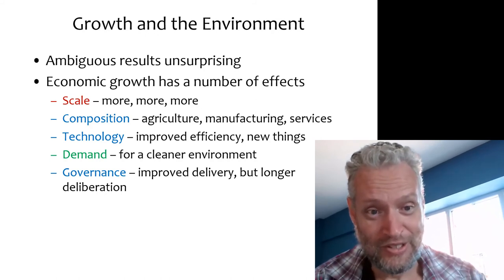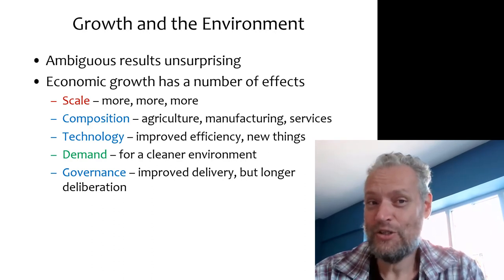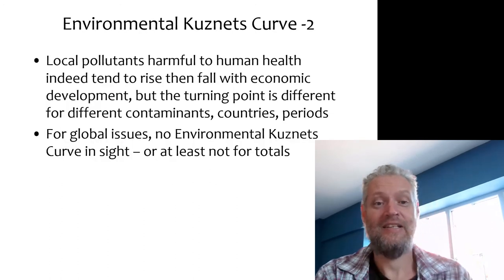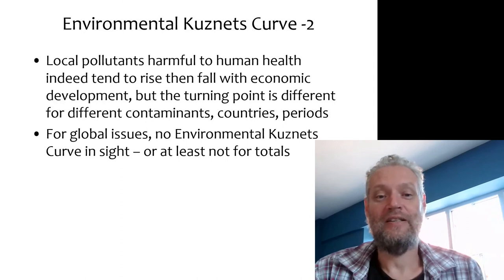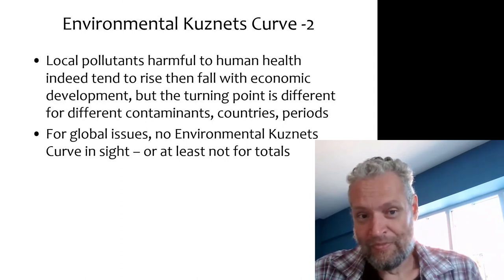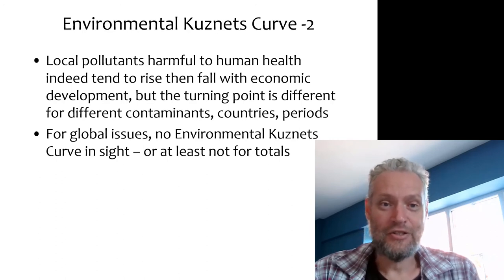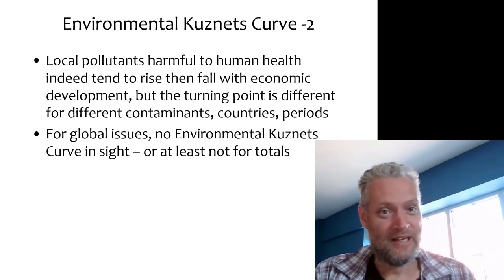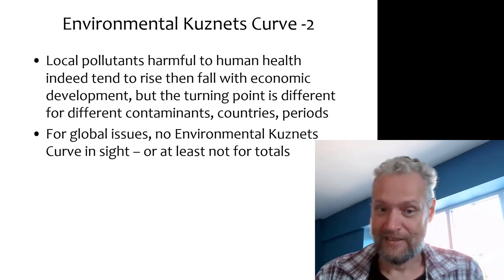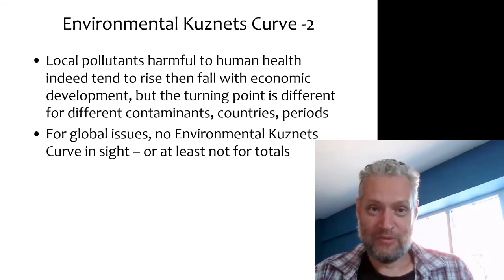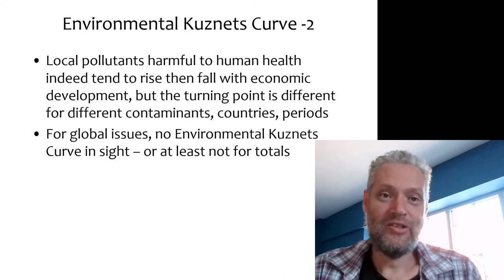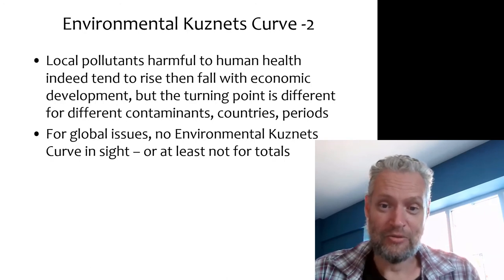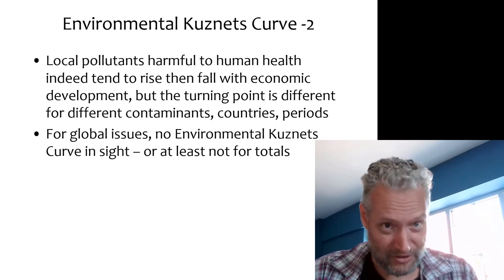So there is no surprise that there is no definitive environmental Kuznets curve, because theoretically it is very complex. If you reason from first principles, you should not be surprised not to find it empirically. That said, if we focus on local pollutants that are directly harmful to human health, then we can often — but not always — discern an environmental Kuznets curve: things are fine when you are poor, get worse at middle income, and then get better when you get rich. But that is a qualitative relationship; the quantitative results are very different for different contaminants, different countries, and different periods.